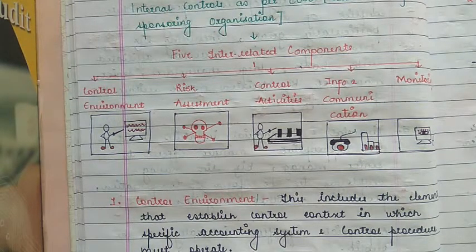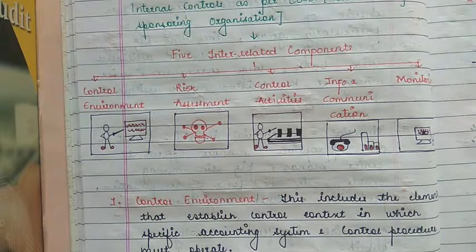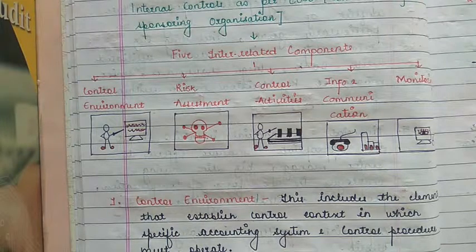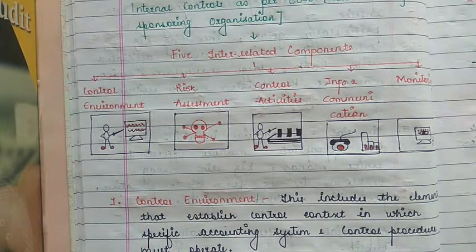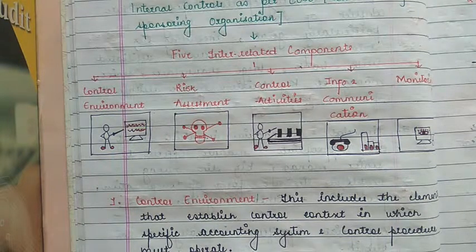Then we moved on to Benefits of Governance, which we learnt with the mnemonic ADI PAI. 'A' was achieving the enterprise objectives, ensuring each element of mission and strategy was managed with clear understanding, transparent decision rights and accountability framework. 'D' was defining and encouraging the desired business behaviour in the use of IT and in execution of IT outsourcing arrangements. 'I' was implementing and integrating the desired business process into the business. 'P' was providing stability and overcoming the limitations of the organisation structure. The second 'I' was improving customer, business and internal relationship and satisfaction, and reducing internal territorial strife, enabling effective and strategically aligned decision making for IT principles.